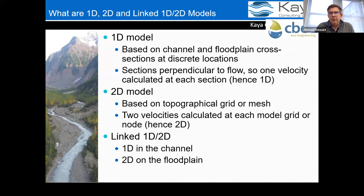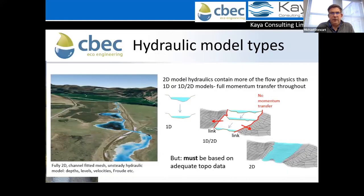A linked 1D-2D model has the channel represented in the 1D approach and the floodplain areas represented as 2D. You've got discrete cross sections and then some sort of link or spill line which allows water to pass from the 1D channel section into the 2D domain. You can see this illustrated with the cross sections, the mesh or grid, and the middle figure showing the link between the two.